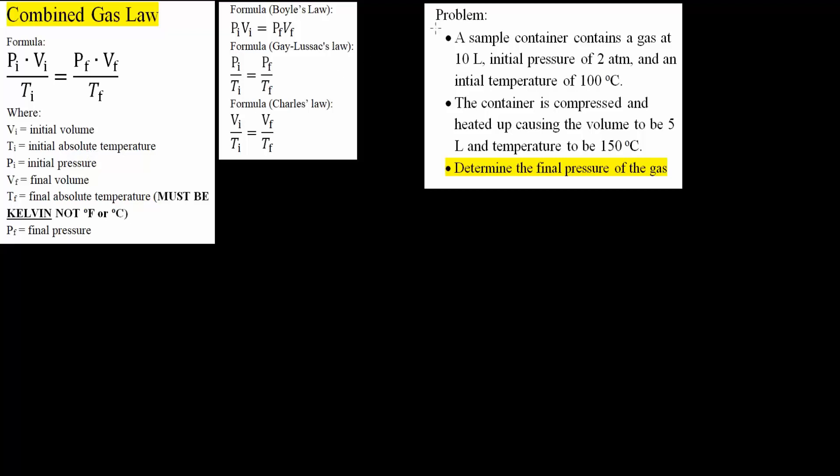Now, let's try this problem. A sample container contains a gas at 10 liters volume, initial pressure of 2 atm, and initial temperature of 100 degrees Celsius. We know all of this information right here.